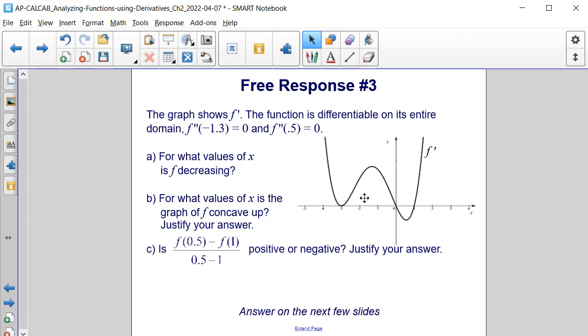The graph shows a function's derivative, f prime. The function is differentiable on its entire domain. We know that f double prime of negative 1.3 is equal to 0, and f double prime of 0.5, or 1 half, is equal to 0.